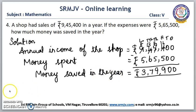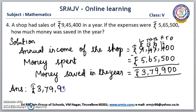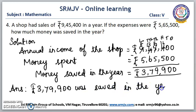Now we have to write the answer. The answer is Rs. 3,79,900 was saved in the year. Is it clear, children? Shall we go to the next one?